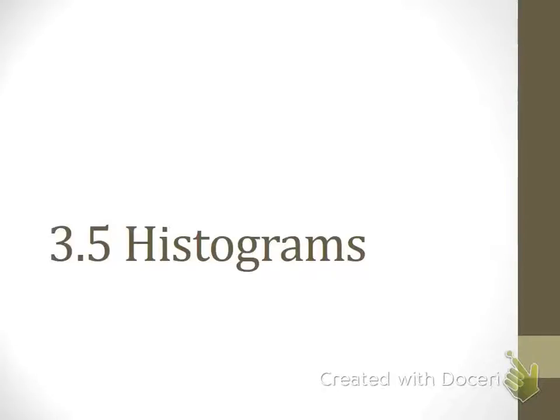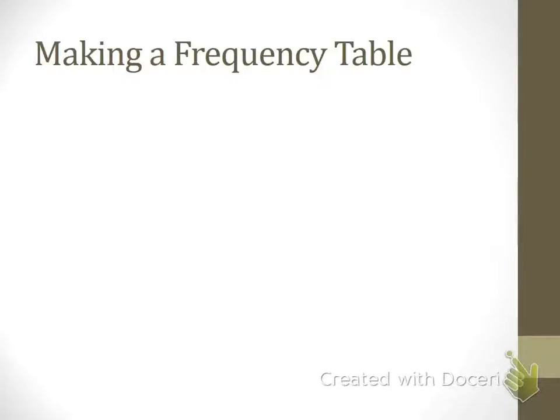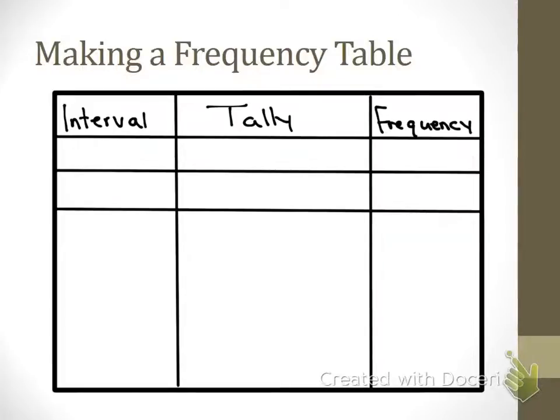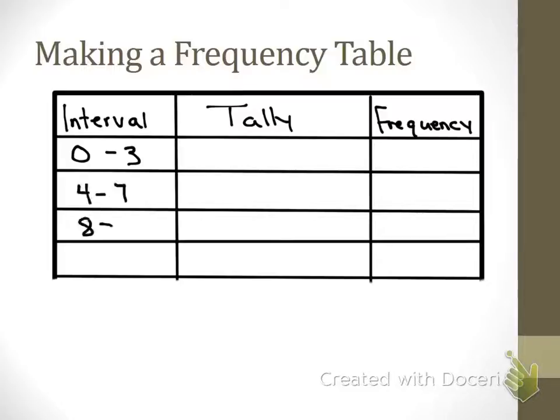So a histogram will show us the frequency of numbers within intervals. We're going to look at the first example, making a frequency table. I want you to draw a rectangle on your papers and divide it into three columns: intervals, tallies, and frequencies. And I'm always going to give you the intervals. Go ahead and write down these intervals. On page 130, underneath example 1, it gives us a science example. The number of named stars in a group of 34 constellations are listed below, and it wants us to make a frequency table of this data. So what I need to figure out is how many numbers fall within each one of these intervals.